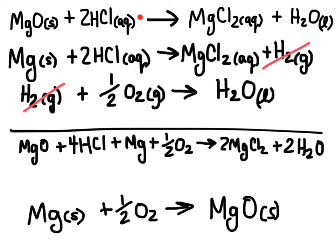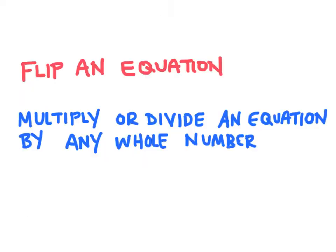The way these equations are set up, the result when added together is not close to what I'm looking for. I can modify these chemical reactions in two ways to cancel out unwanted compounds and keep the ones I want. First, I can flip a reaction by reversing the products and reactants. Second, I can multiply or divide an equation by any whole number.